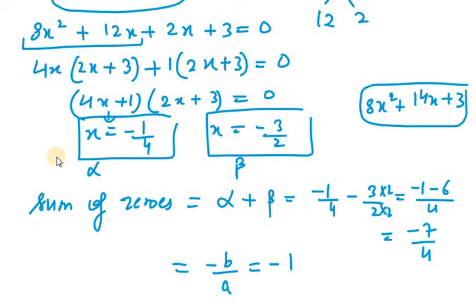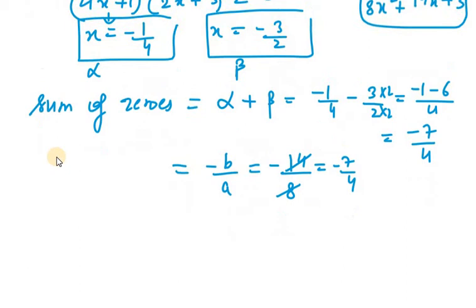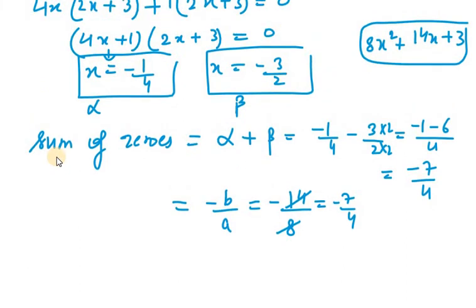B is 14 and A is 8. So we will reduce this and it will be equal to minus 7 over 4. So sum of zeros has been verified.